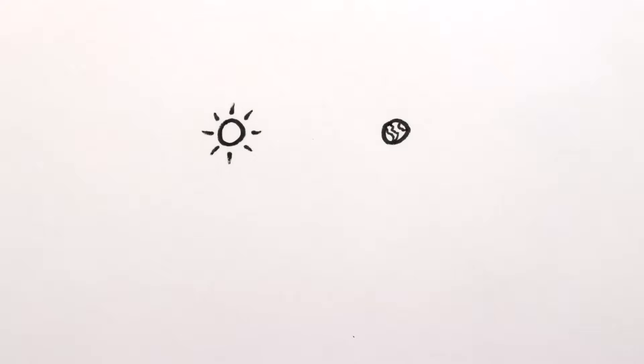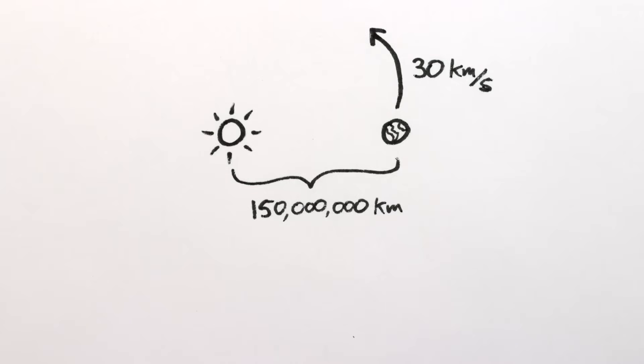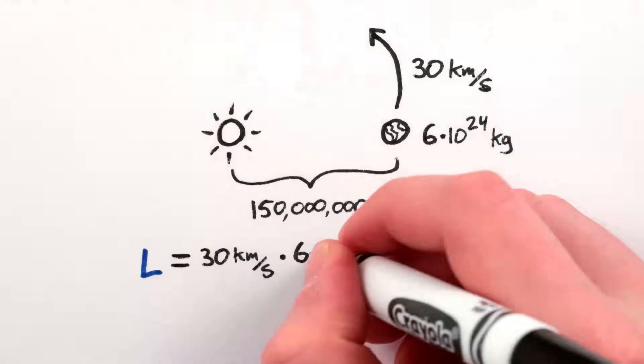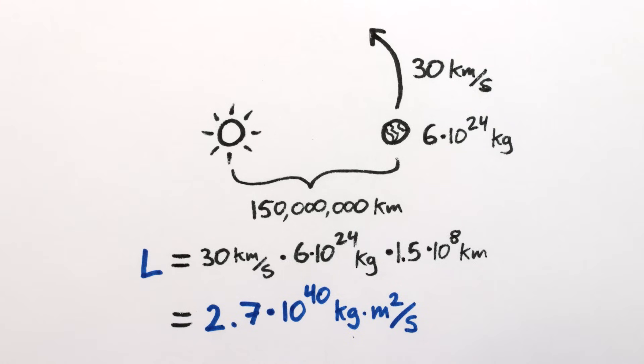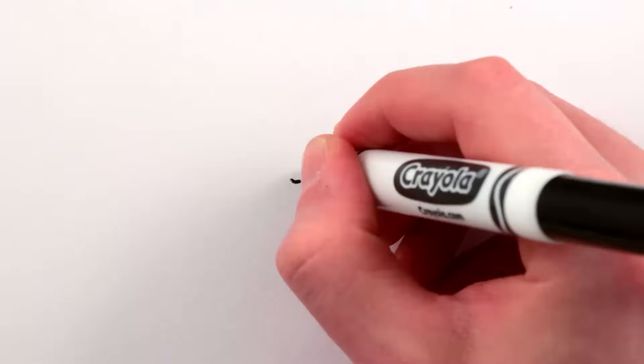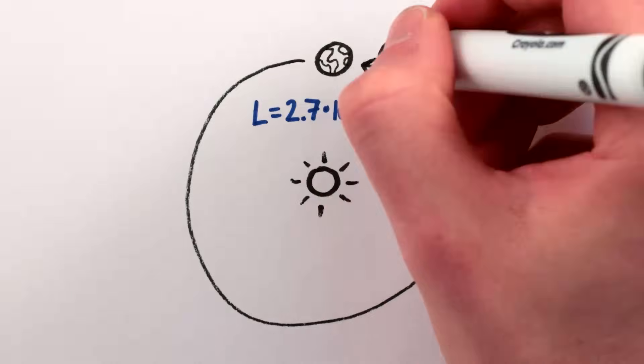So as another example, the Earth, which is 150 million kilometers from the sun, orbits at 30 kilometers per second, and has a mass of 6 times 10 to the 24th kilograms, has an angular momentum of 2.7 times 10 to the 40th kilogram meters squared per second. That's 4,000 quintillion quintillion bicycle wheels. And this angular momentum stays roughly constant over the course of the Earth's orbit, year in and year out.